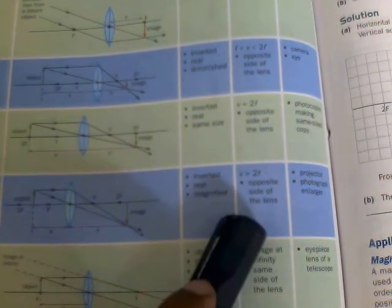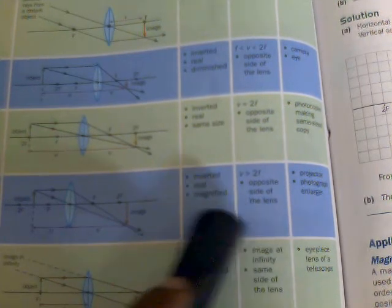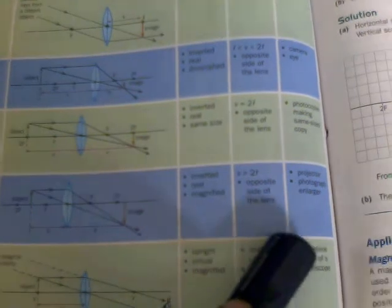The object lies beyond the 2F, and this type of image formation is being used in projectors or photography and enlargement.